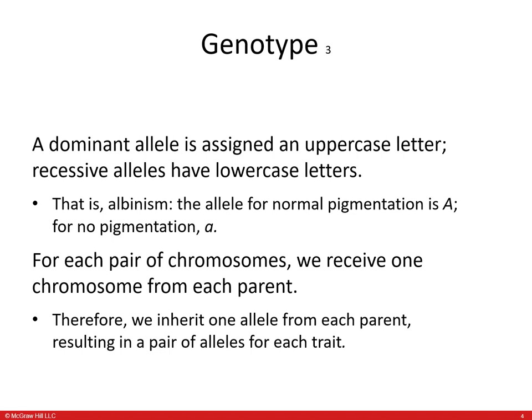For example, in albinism, the allele for normal pigmentation is uppercase A and the allele for albinism is lowercase a. For each pair of chromosomes, we receive one chromosome from each parent, and therefore we inherit one allele from each parent, resulting in a pair of alleles for each trait.